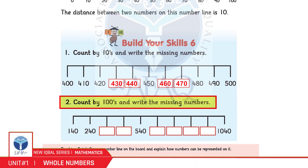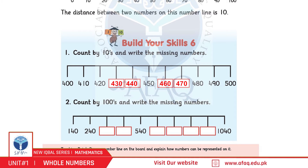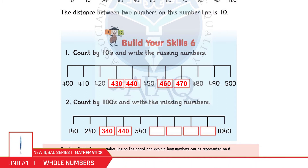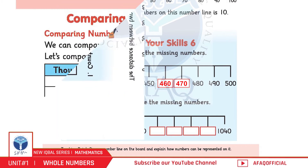Question 2: Count by 100s and write the missing numbers. 140, 240... Next, आप बताएं. Good — 340. Next, आप बताएं. Good — 440. इसी तरीके से अगले parts आप खुद करें।